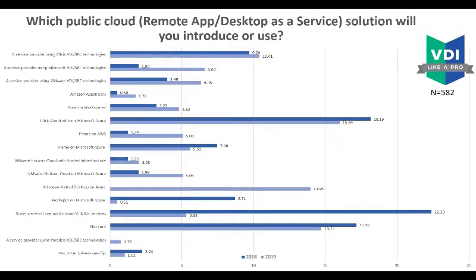Going a little bit deeper: what kind of vendor or solution sounds interesting? You can see the 'we won't use public cloud' response dropping from 22% in 2018 to 5% in 2019. A lot of colleagues in our industry are really investigating and introducing new solutions. Public cloud is disrupting the norm, with Microsoft WVD, Citrix, Amazon, Nutanix Frame, and VMware all entering the space.